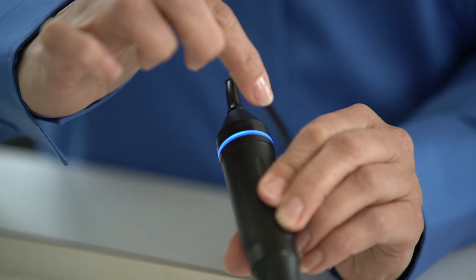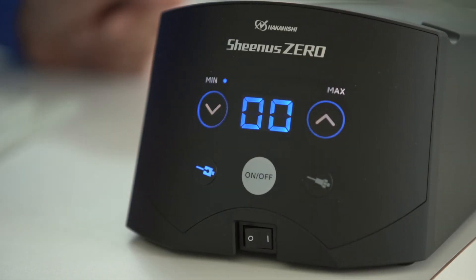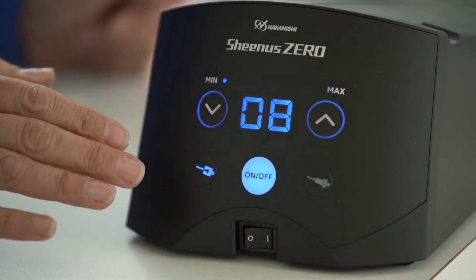There's improved visibility with a blue LED on the handpiece to indicate on and off, and a blue LED display on the controller to show any error messages and what the power setting is.